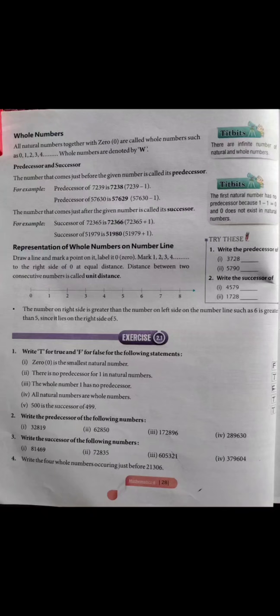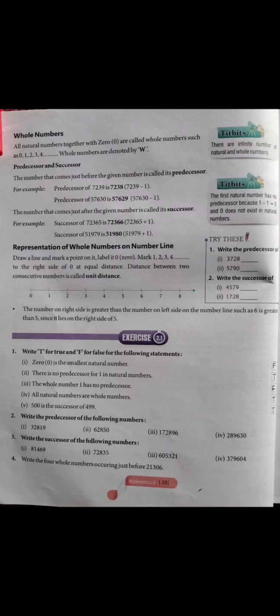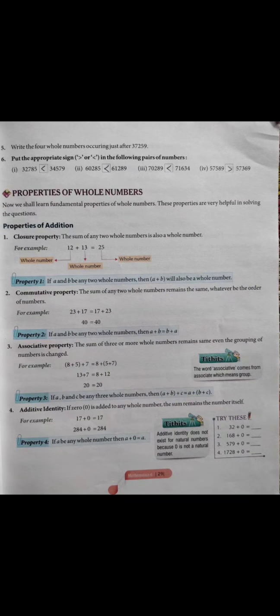Fourth question: write the four whole numbers occurring just before 21,306. Hume 21,306 se just pehle aane waale char numbers likhne hain: 21,305, 21,304, 21,303, aur 21,302 — yeh hamare four whole numbers ho gaye jo 21,306 se pehle aate hain.